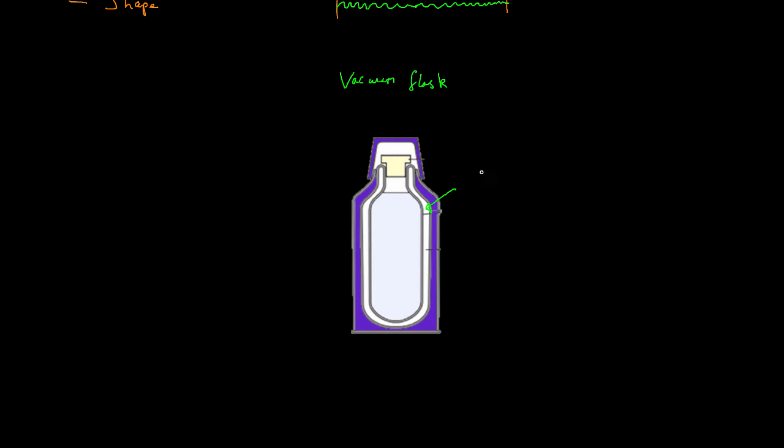Here we have a layer which contains a vacuum. Now, vacuum just means there's nothing in there whatsoever, not even any air in there. And what this does is it cuts out convection and it reduces conduction.